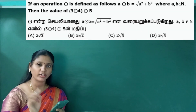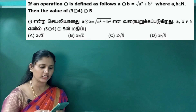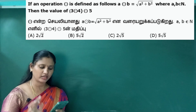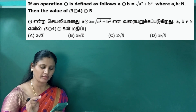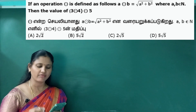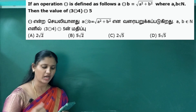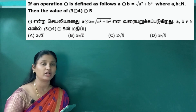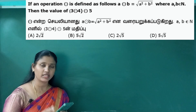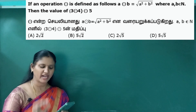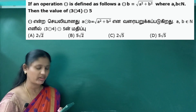If you have a circle operator, you can write: a circle b equals square root of a squared plus b squared, where a and b belong to natural numbers. So three circle four means we apply this formula to 3 and 4.